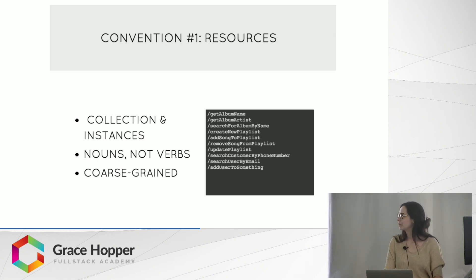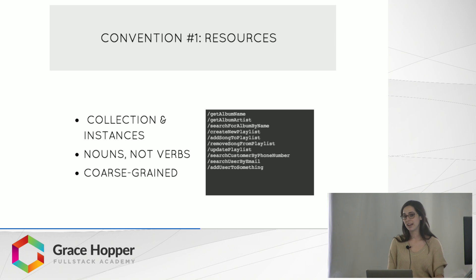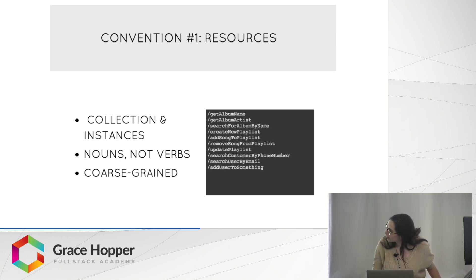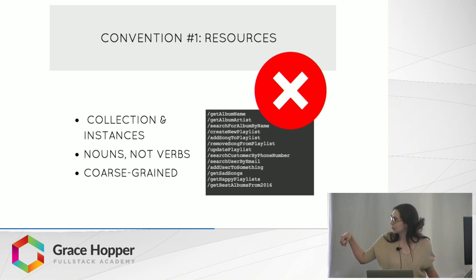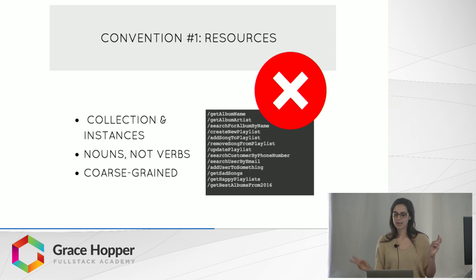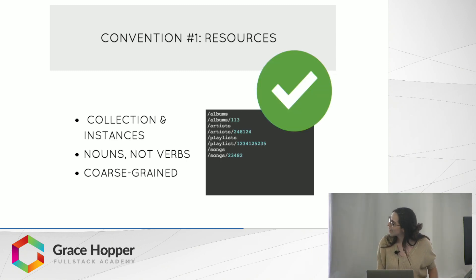I want to go through a couple of conventions regarding good API design. It's a style, so you can interpret it any way you want — there are no hard and fast rules, but these are conventions in the community. When you talk about resources, you should really only think about two: collections and instances. You should think of nouns, not verbs, and coarse-grained. Examples like 'get album name,' 'get album artist,' 'get best albums from 2016' — as your services grow, this list gets longer and makes it more confusing. Instead, just use 'albums' and an album ID as your instance.